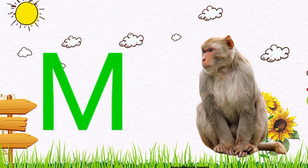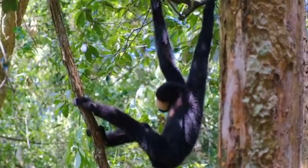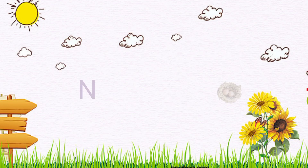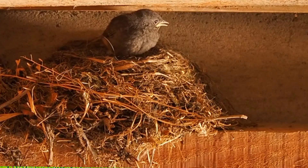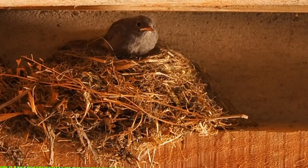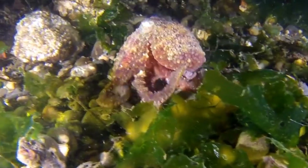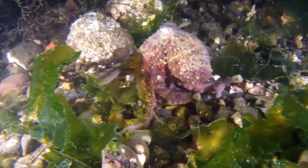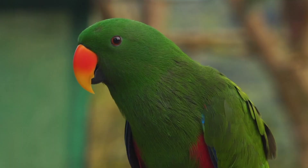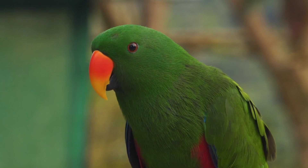M for monkey. N for nest. O for octopus. P for parrot. Q for queen. W, X, Y, and Z. Now I know my ABCs.